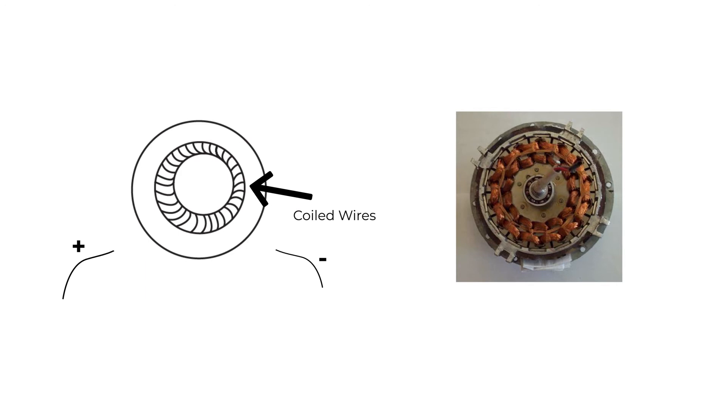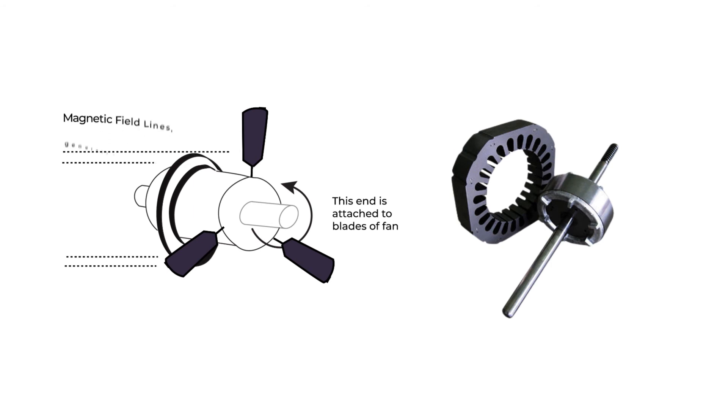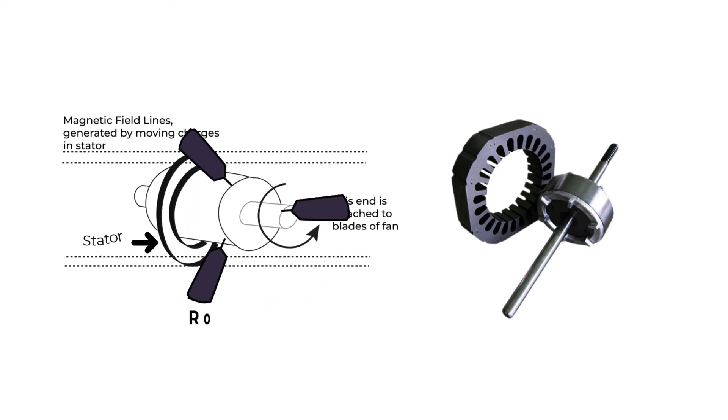Inside a fan, there are a large number of wires coiled together. When electricity flows through them, electrons inside these wires move and generate an electric and magnetic field in the surrounding. This coiled part remains fixed and this is called the stator. But the part which is connected to fan blades remains free to move. This part is called the rotor.